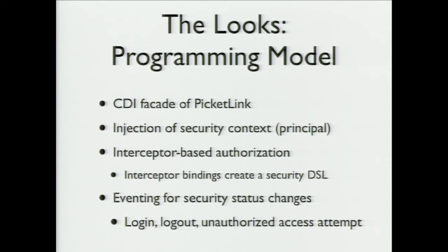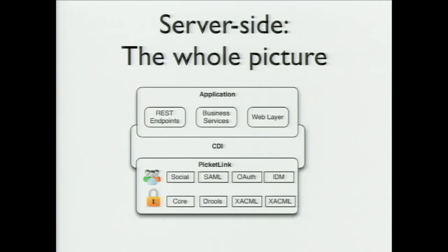We use CDI events for security status changes: when someone logs in, logs out, or there is an unauthorized access attempt, the application will send an event. You can observe and react to that in your application. CDI provides the link between the power of PicketLink and your application model — you can use this to secure not only EJBs, but also RESTful endpoints and simple POJO business services.